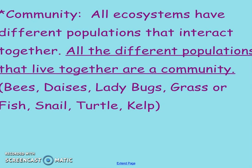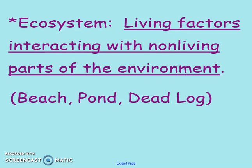The next level is community. This is going to be different populations that live together — bees and daisies and ladybugs and grass, or fish and snails and turtles and kelp. You've got multiple different species of plants and animals. The community level still only includes your biotic factors. As we move to the ecosystem level, this is where you add in the non-living or abiotic part — a beach, a pond, a dead log. There are both abiotic and biotic factors at this level.